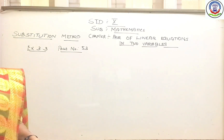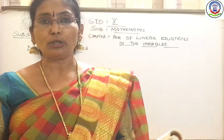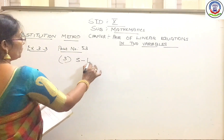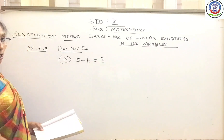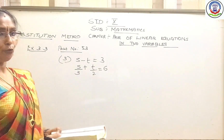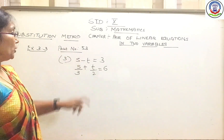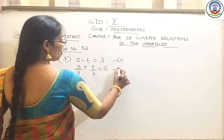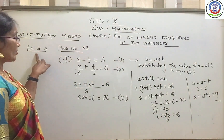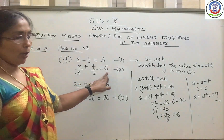The first question — x plus y equal to 14, x minus y equal to 4 — is very simple and you can do it yourself. I am going to do the third sum: s minus t equal to 3, and s by 3 plus t by 2 equal to 6. How do you find the solution using the substitution method? Two equations are already given — equation 1 and equation 2.